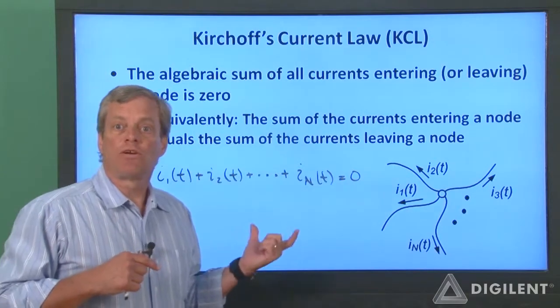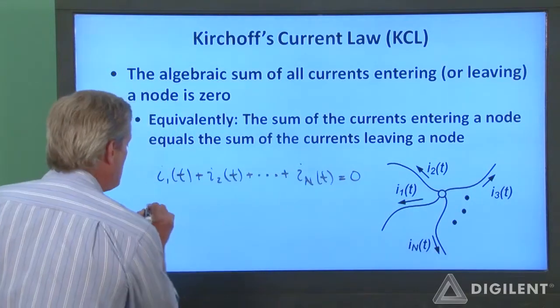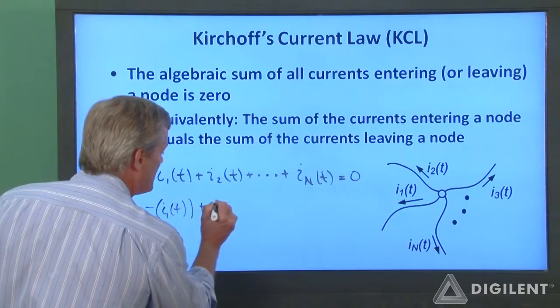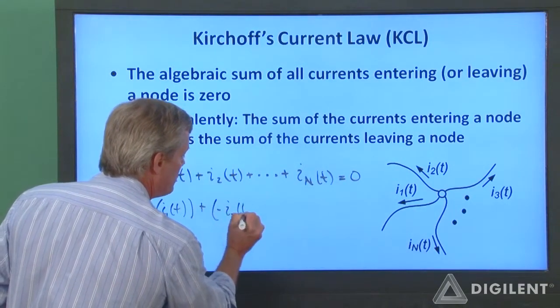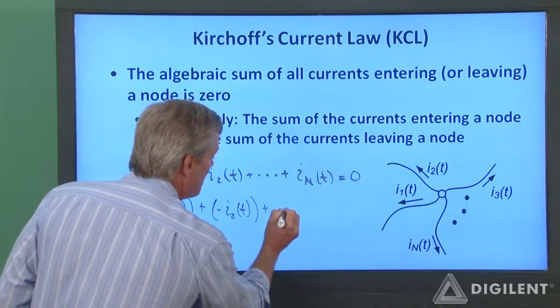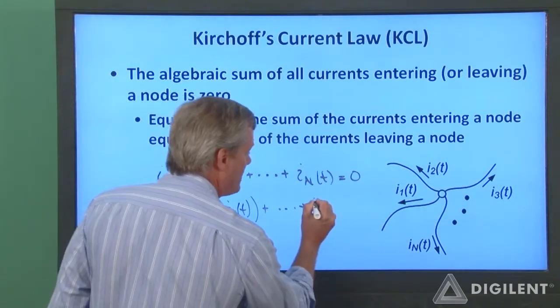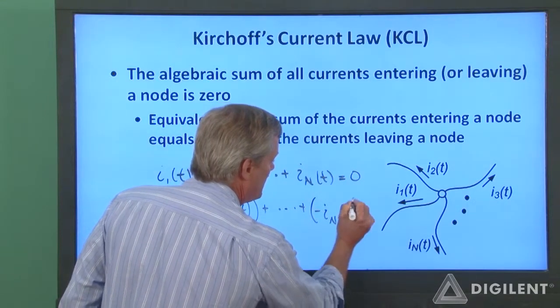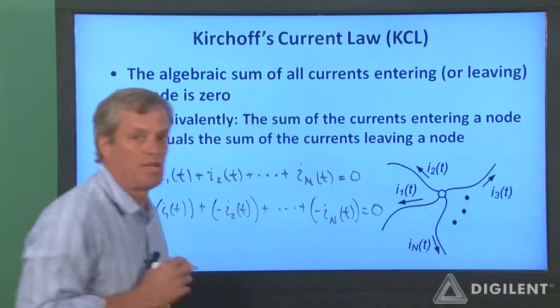So, if we want to sum the currents entering the node, we get the negative of i1 of t plus the negative of i2 of t plus a bunch of other things plus the negative of i sub n of t. Those also sum to zero.